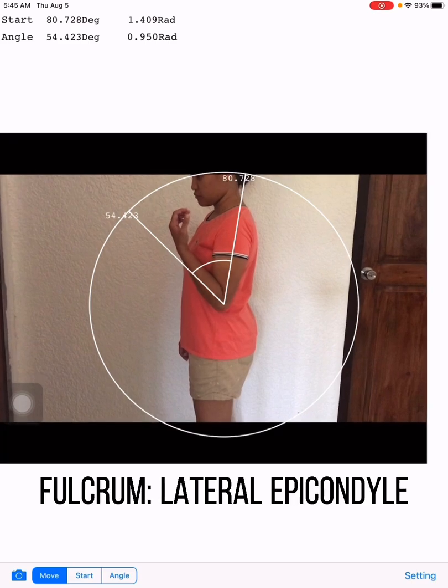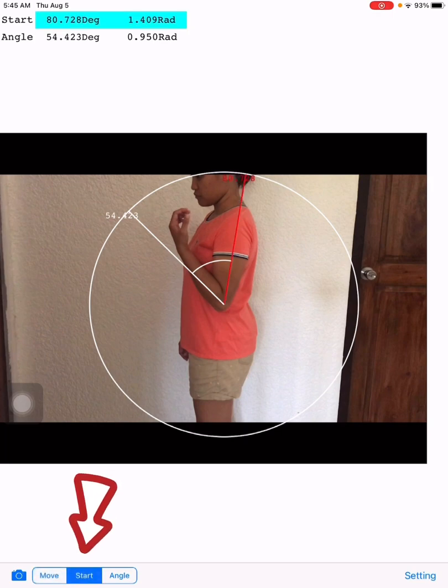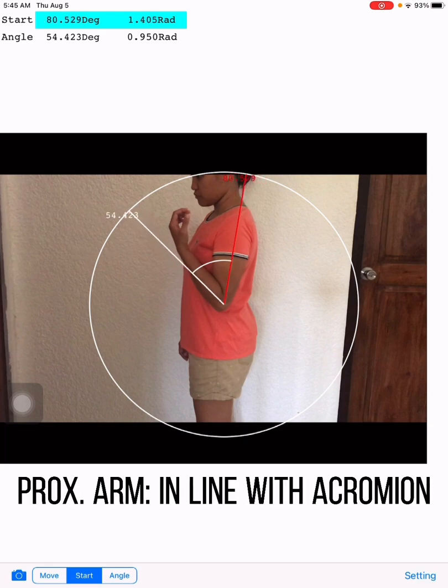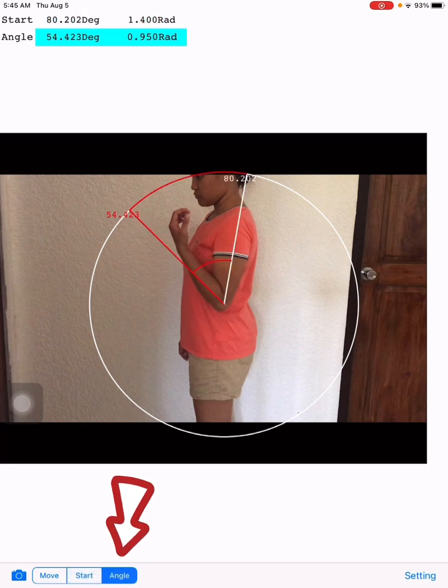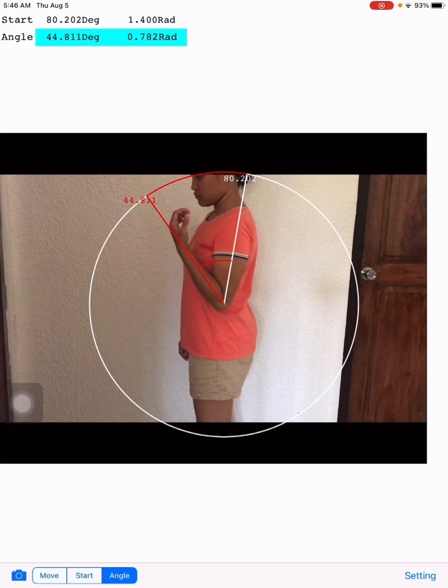Click on the lower left side once again and click the start button. The proximal arm, align it with the acromion process. Then the angle, the distal arm, this red line moving, align it with the radial styloid process.